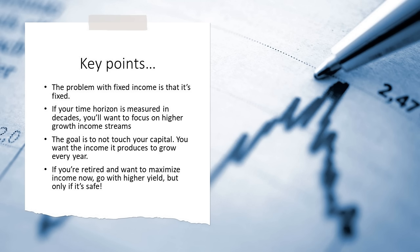The problem with fixed income — bonds, weighting your portfolio with bonds and equities, and increasing that weighting as you age — is that fixed income is fixed. If you're paid a fixed amount every month, in 30 years your purchasing power halves. That's why we developed Quantigence: we needed an investment strategy that made quality of life appreciate over time and beat inflation. If your time horizon is measured in decades, focus on higher growth income streams. The goal is not to touch your capital; you just want the income it produces to grow every year. But if you're retired doing a lump sum investment and want to maximize income now, you can go with higher yield and lower growth — but only if it's safe.